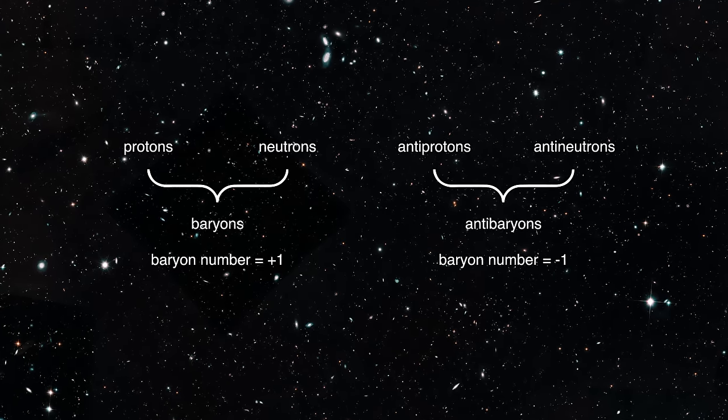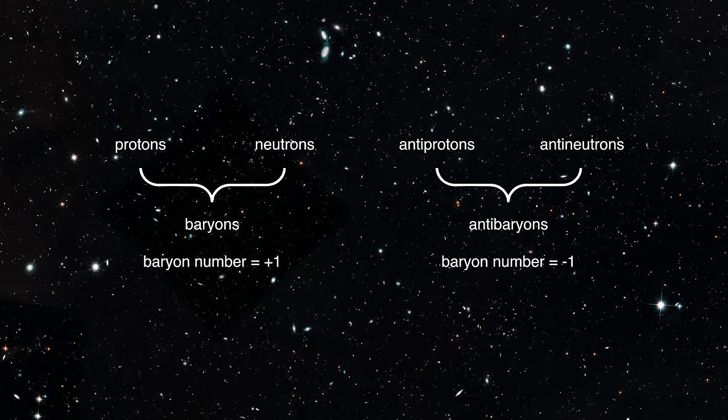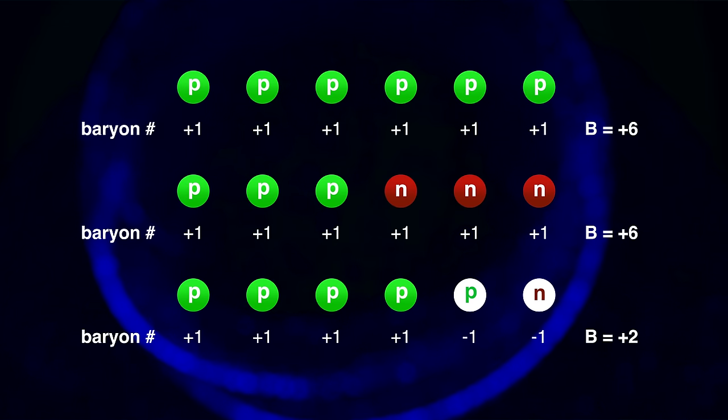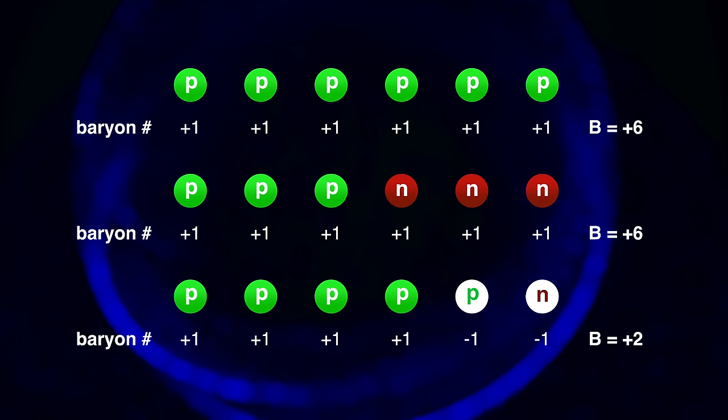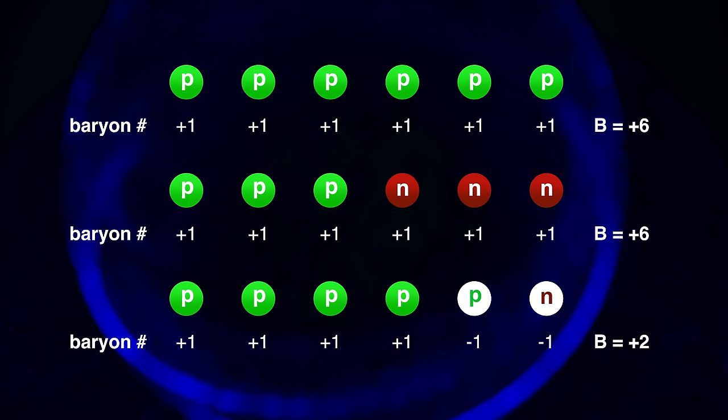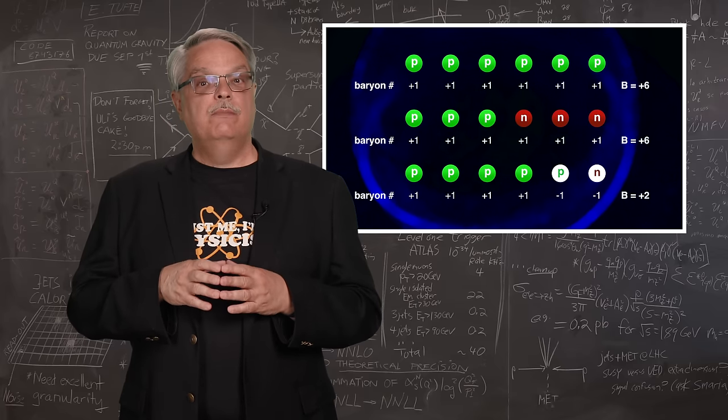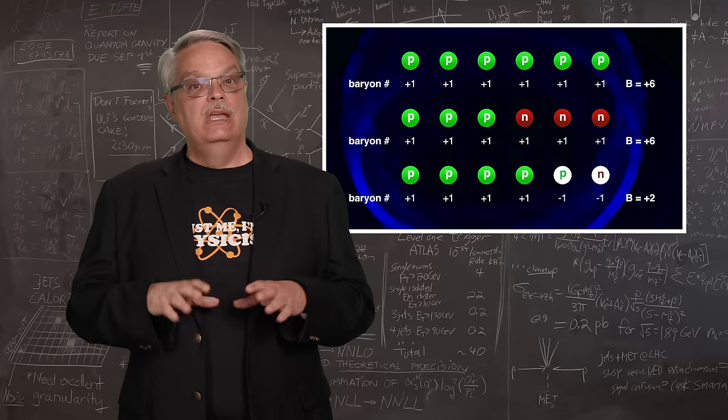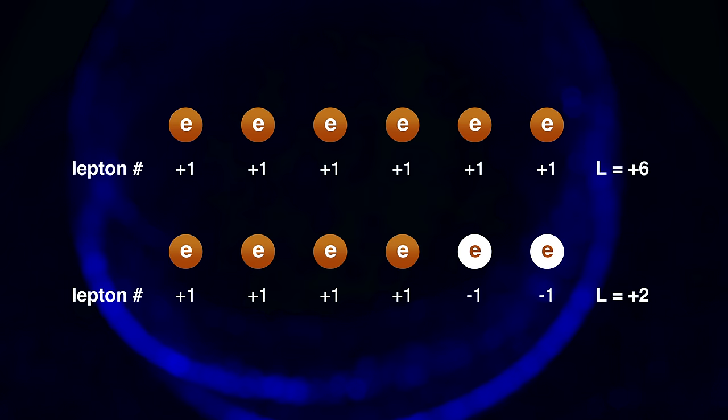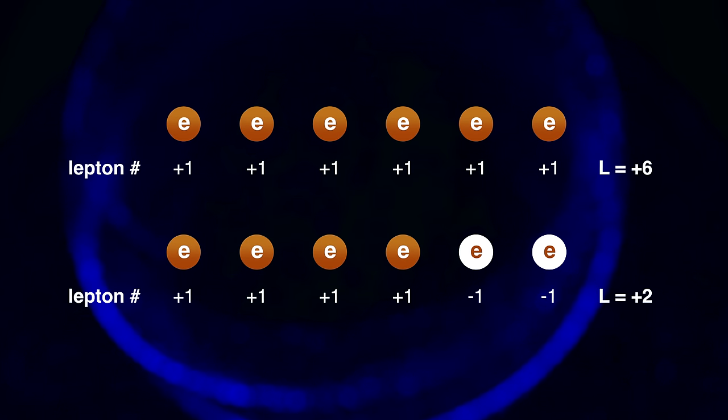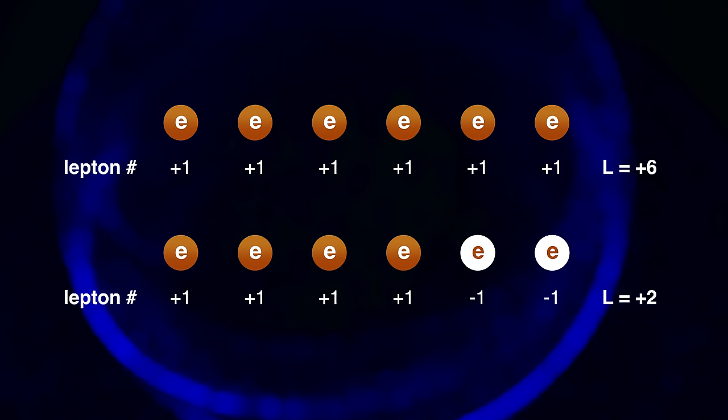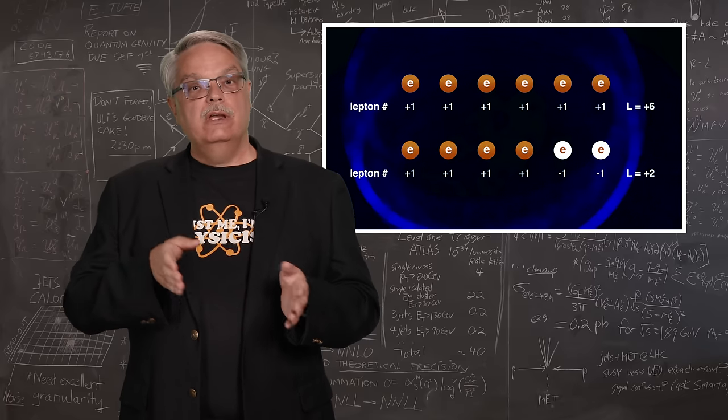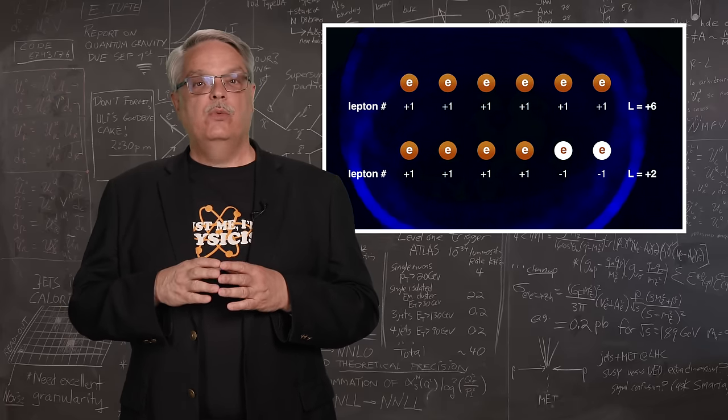In the water world in which we live, we have protons, neutrons, and electrons. Protons and neutrons are of a class of particles called baryons. Electrons are leptons. Each baryon has a baryon number of plus one. Six protons have a baryon number of plus six, as do three protons and three neutrons. Antimatter protons and neutrons each have a baryon number of minus one. So four protons, one antimatter proton, and one antimatter neutron have a combined baryon number of plus two. Lepton number is the same, with electrons and neutrinos having a lepton number of plus one, and antimatter electrons and antineutrinos having a lepton number of minus one. In our water world, baryon and lepton number are conserved, which is a fancy way to say that they don't change. Whatever complicated particle interaction that occurs, both the baryon and the lepton number after the interaction is the same as before the interaction.